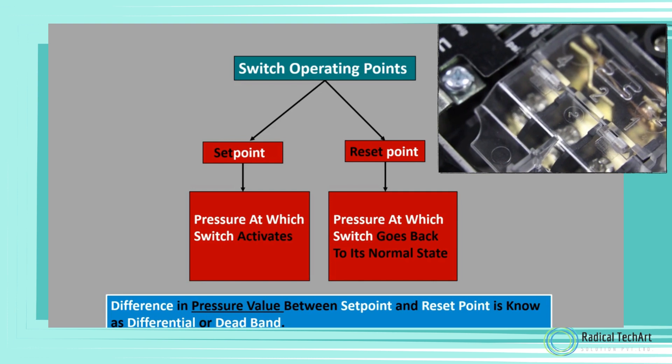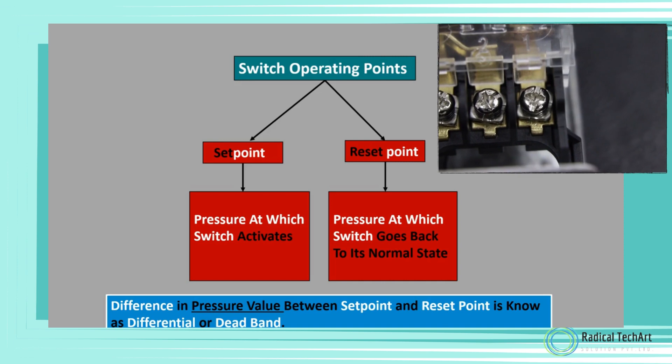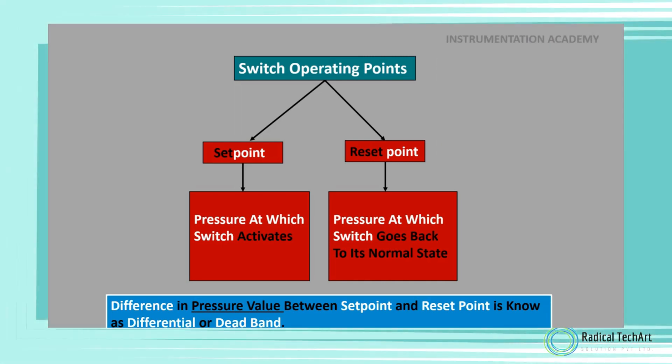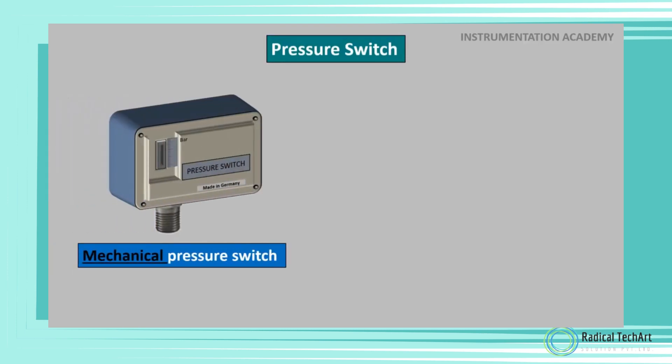The difference in pressure value between the setpoint and the resetpoint is known as differential or dead band of a pressure switch. In most switches, differential can be adjusted, and some switches have fixed and not adjustable differential.